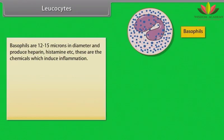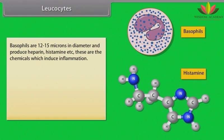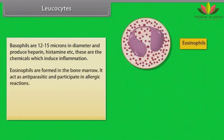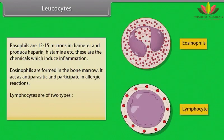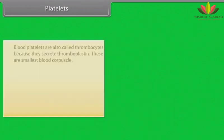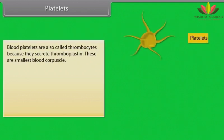Basophils are 12 to 15 microns in diameter and produce heparin, histamine, etc. These are chemicals which induce inflammation. Eosinophils are formed in the bone marrow; they act as anti-parasitic agents and participate in allergic reactions. Lymphocytes are of two types — B and T lymphocytes — and they fight with diseases.